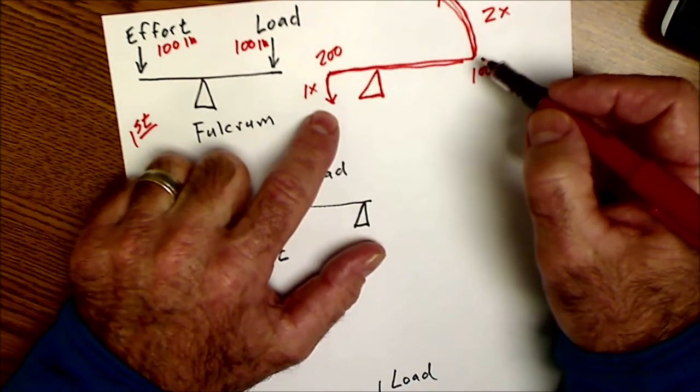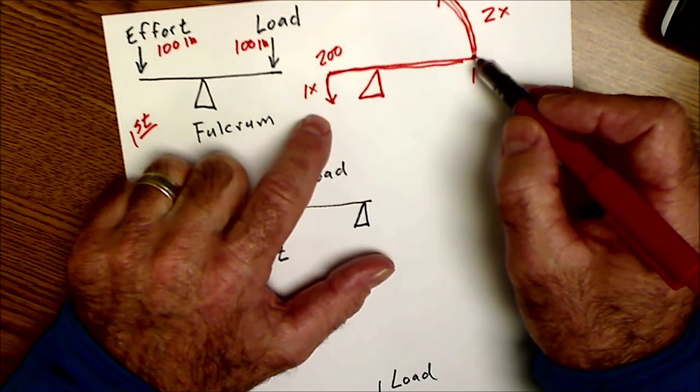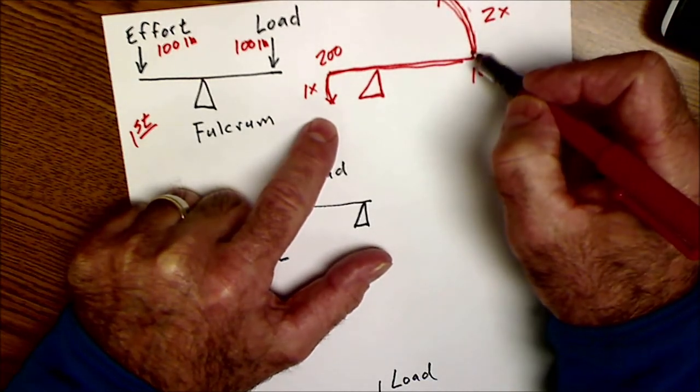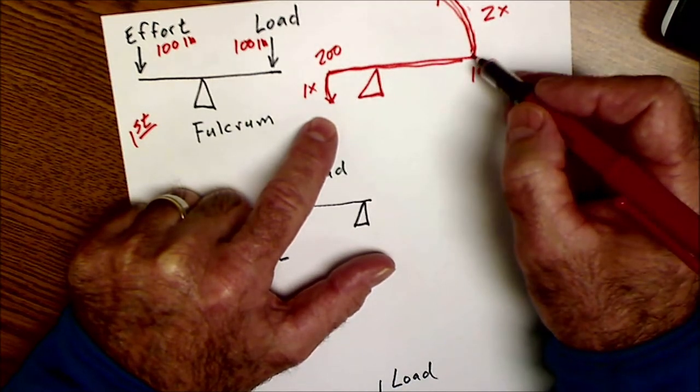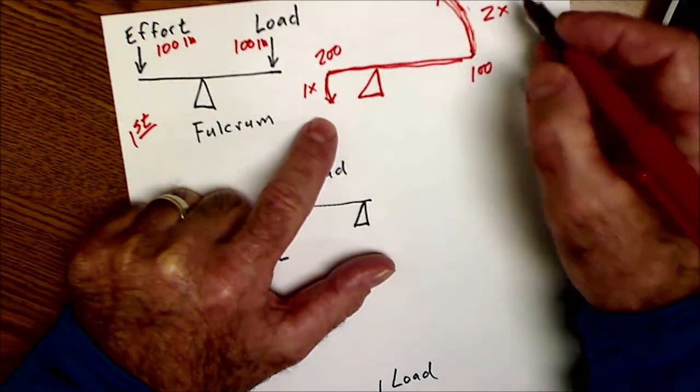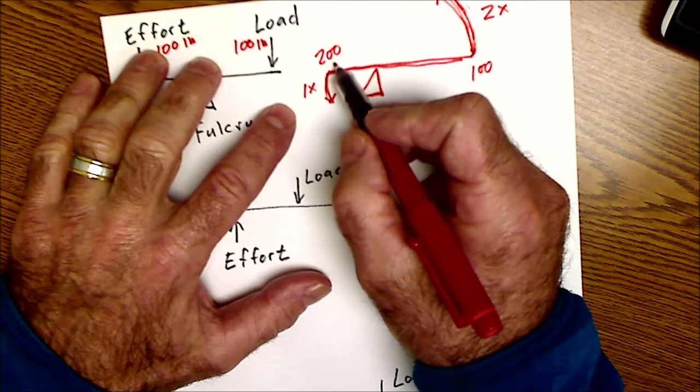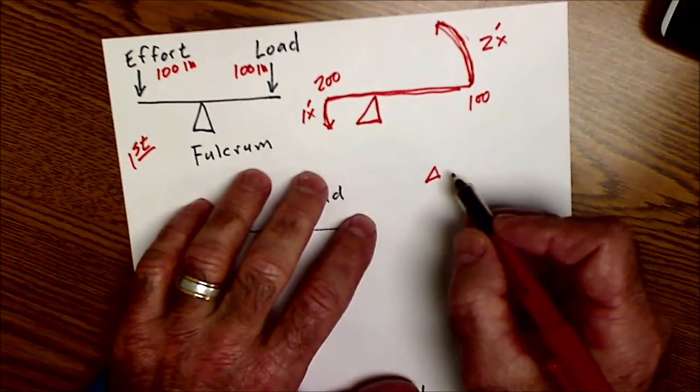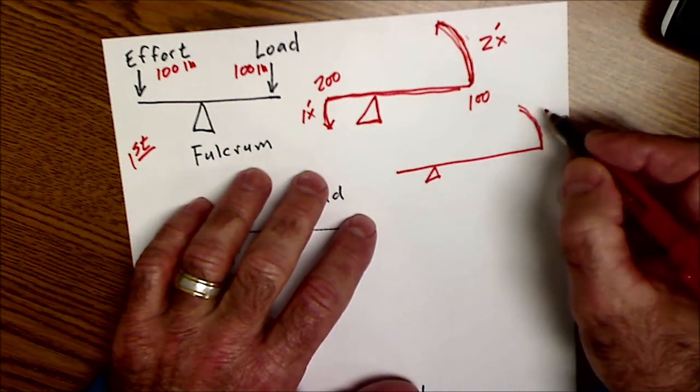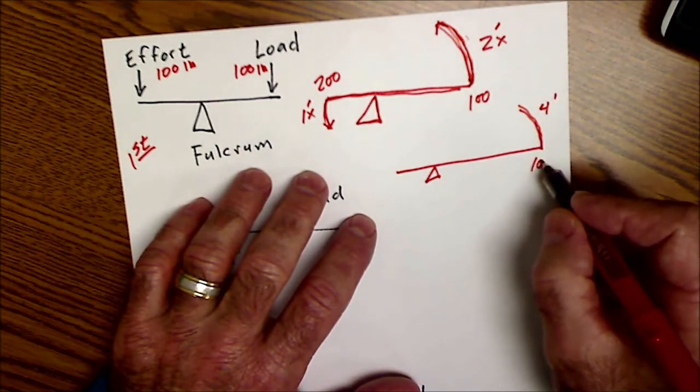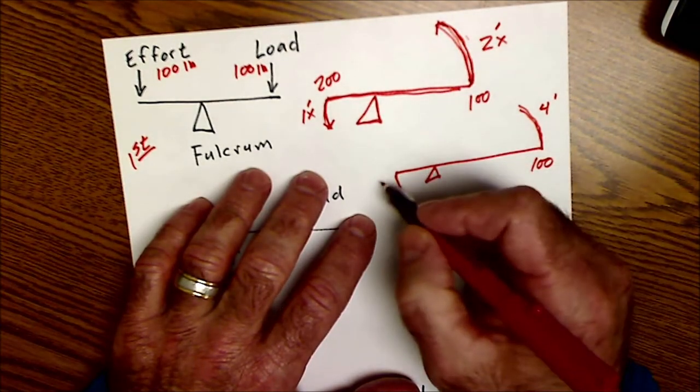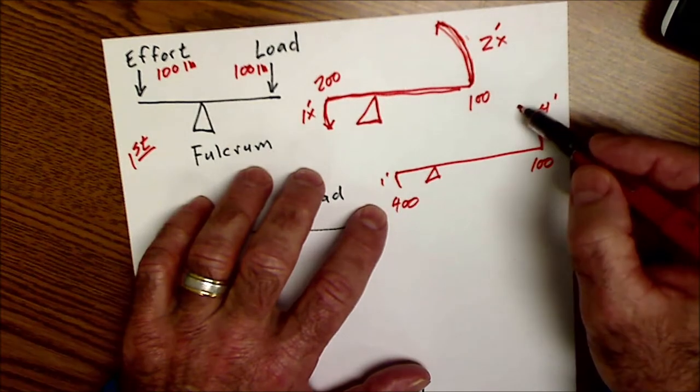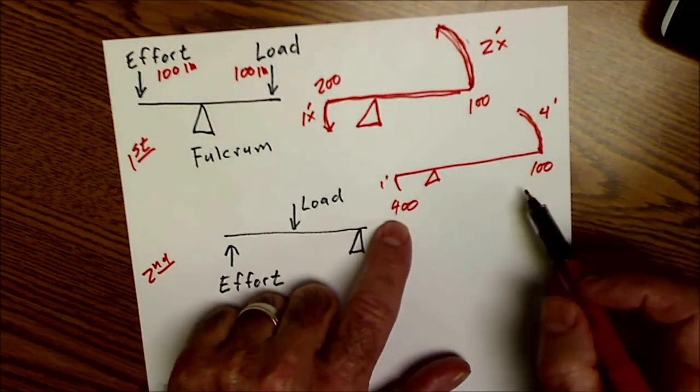One way I always think about mechanical advantage is I always think about it's a ratio really of the effort versus the load and if you could find that ratio of distance traveled that correlates directly to the mechanical advantage. So if a hundred pound person is able to travel whatever that is two feet that is the equivalent of a 200 pound person traveling one foot. If the mechanical advantage were even greater so the fulcrum is even further down and this amount of travel is now say four feet then a 100 pound person can make a 400 pound person travel one foot. So the ratio of travel equates to the mechanical advantage.